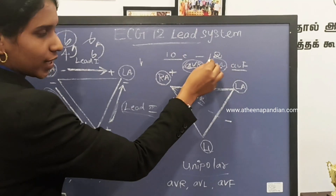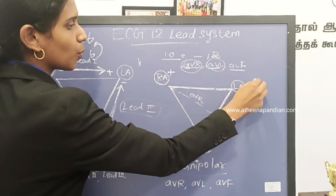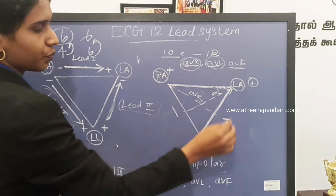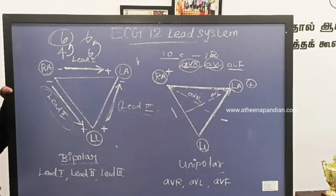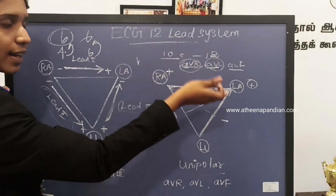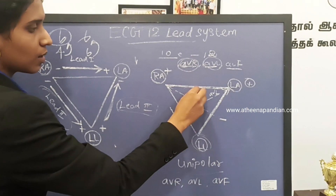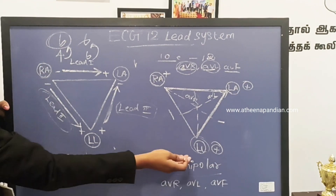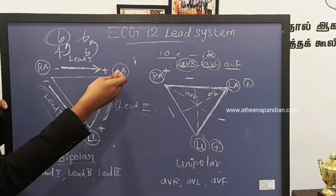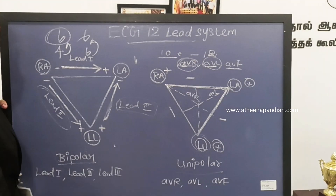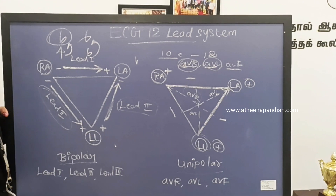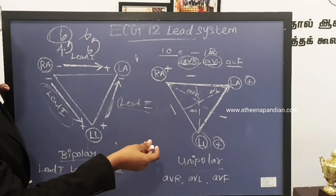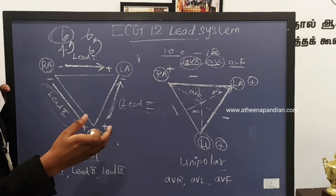In augmented vector left, the positive pole is the left arm and the other two are negative. So here we take AVL — augmented vector left — which shows the upper left side of the heart. And then AVF, augmented vector foot: the positive pole is the left leg and the negative pole is measured as an average between the right arm and the left arm. This augmented vector foot waveform clearly shows the inferior walls of the heart. These waveforms are used to view the heart from different angles and directions.